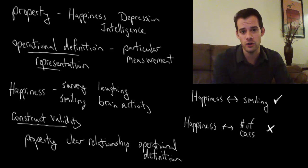And this is why this should be the first thing that you look at whenever you see a study or you see some results. You say, wait a minute, what's the property and how are they measuring it? And if that relationship isn't clear, then I don't really care what the results were.